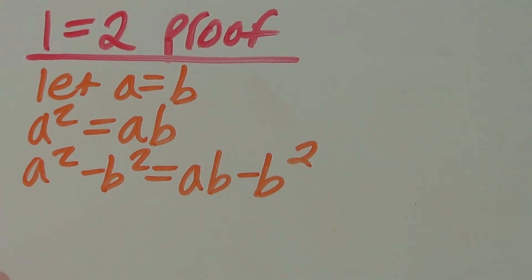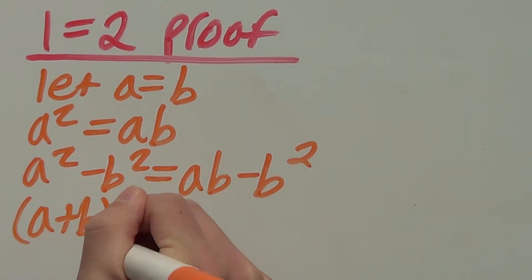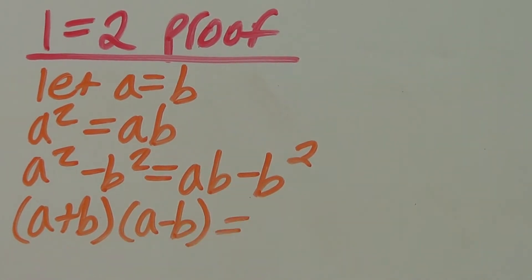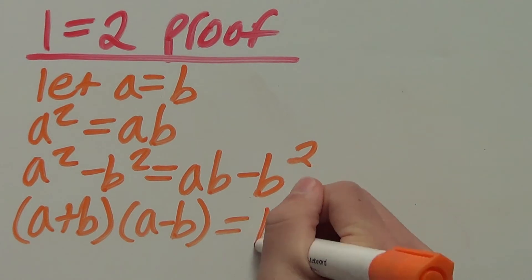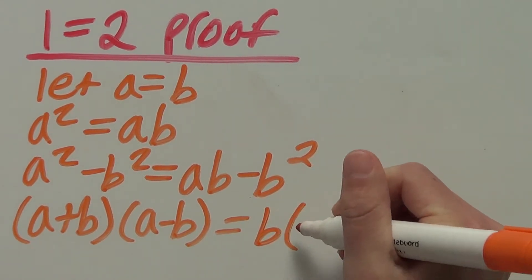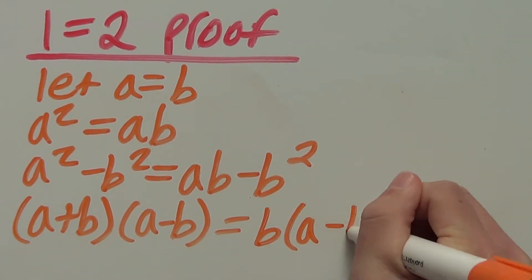Next we can see we can factorize both sides. This side is the difference of two squares. So that goes to a plus b and a minus b equals. And then this side we have a greatest common factor of b. So b and then a minus b.